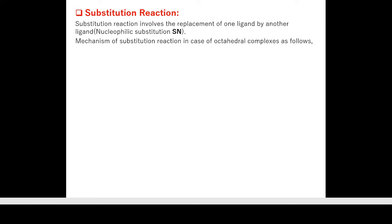In some cases, the central metal ion may also get replaced by another metal ion. In that case, the substitution is called electrophilic substitution. Now let's see the mechanism of substitution in octahedral complexes — complexes containing coordination number 6 along with a central metal atom.